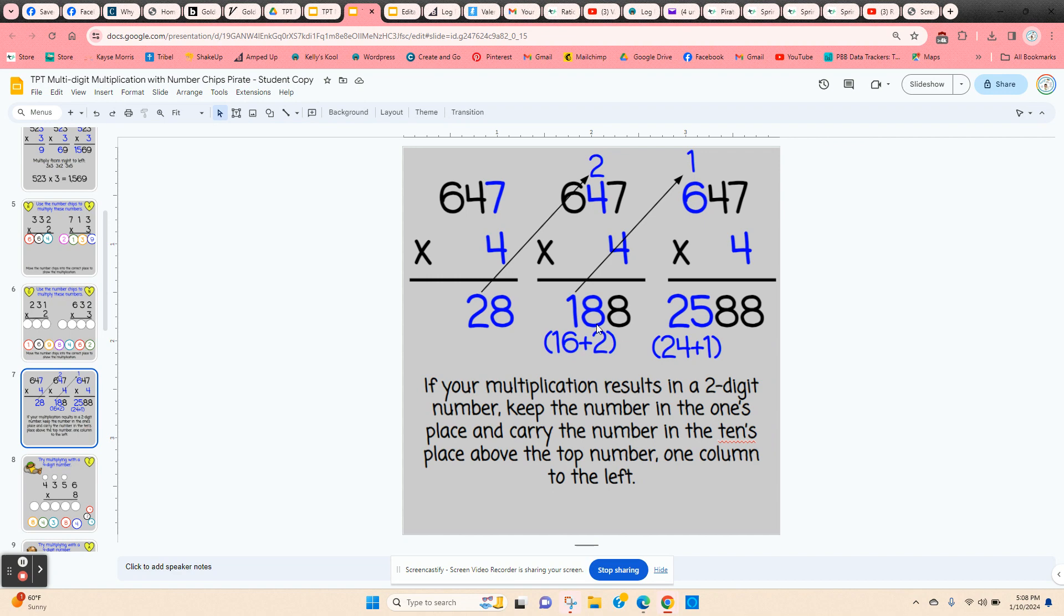Which will give them 18. They're going to place the 8. The 1 is going to move to the column to the left above the 6. So 4 times 6 is 24 plus 1 is 25.